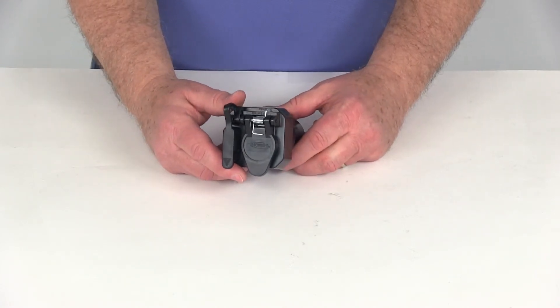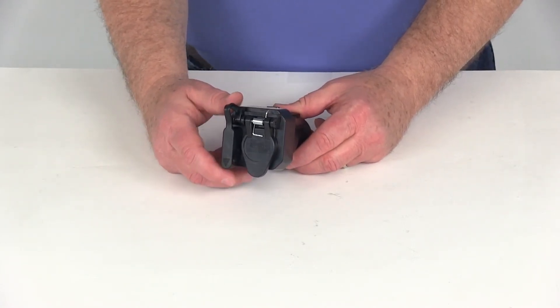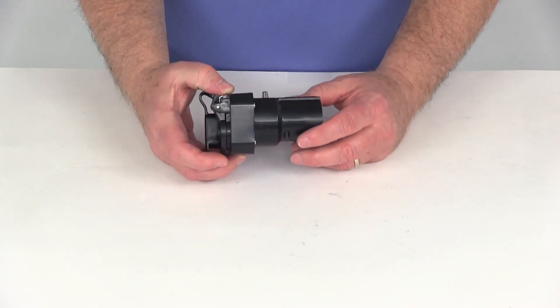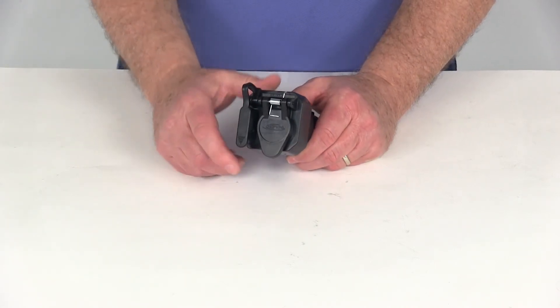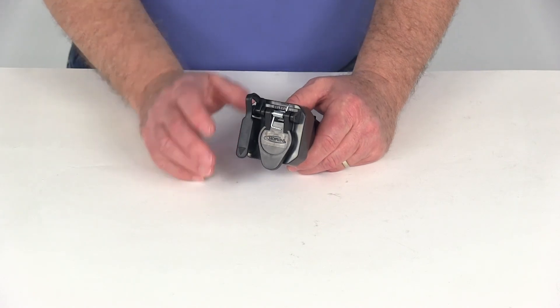But that should do it for the review on part number 37575, the Hopkins Multi-Tow 7-Way Blade to the 6-Way Round and the 4-Way Flat Adapter with the covers.